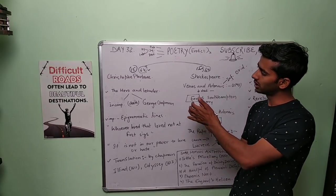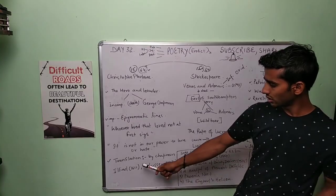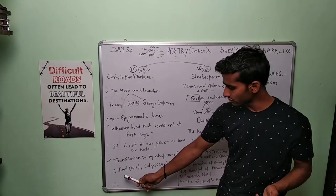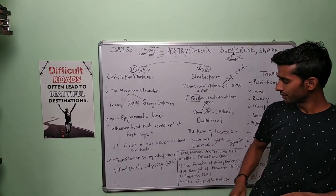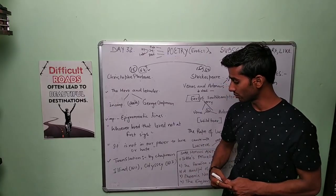George Chapman is not only—you know, he completed this work, but he was a great translator. So he got some things translated like the Iliad by Homer, Odyssey.